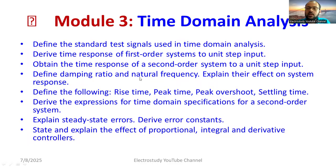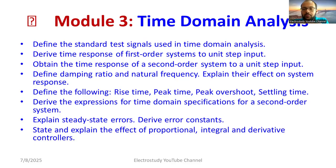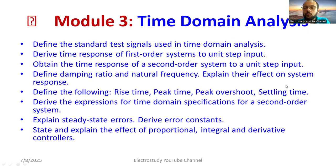The damping ratio is the ratio of actual damping to critical damping. Define the following time domain specifications: rise time, peak time, peak overshoot Mp, and settling time. For example, peak time tp = π / (ωn · √(1 − ζ²)).